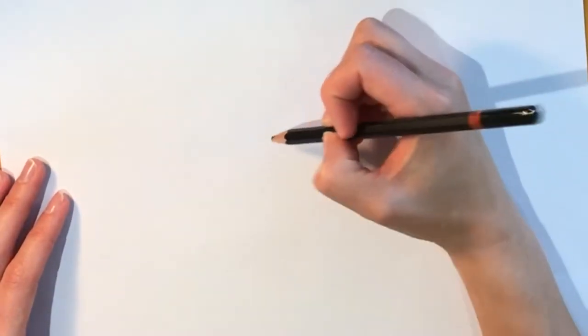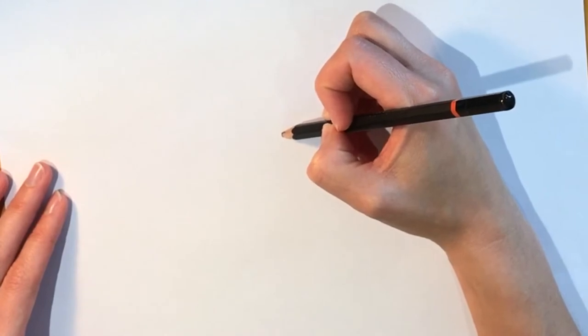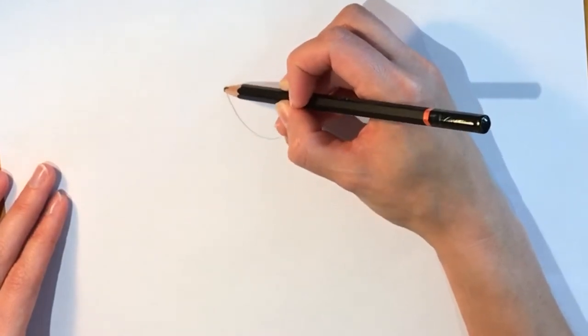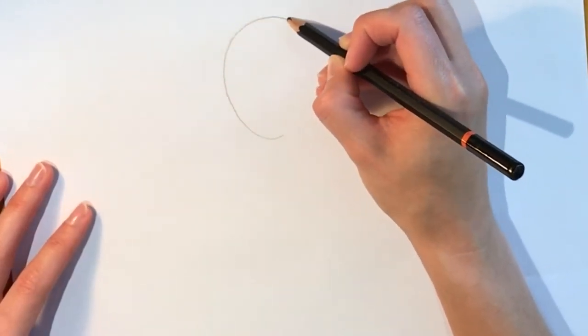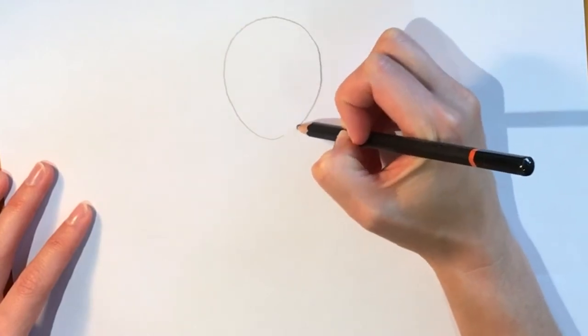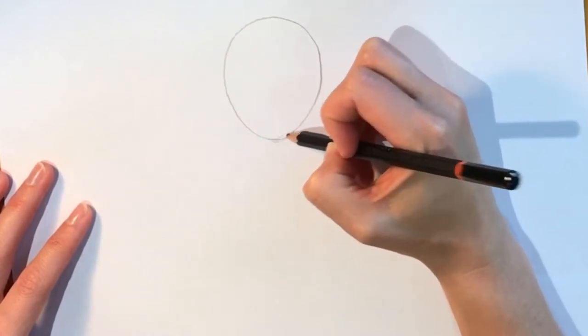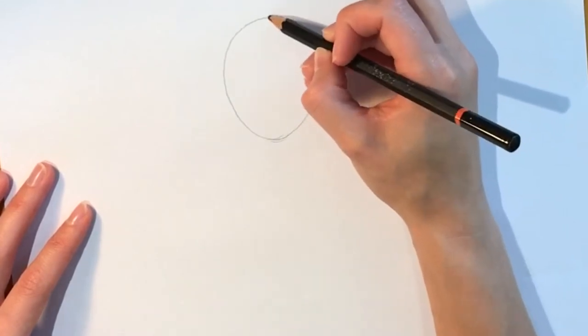So to start off, let's draw an upside down egg shape. Just like that. It doesn't have to be perfect, remember, and draw it lightly. I'm doing it more heavily so that you can see it.